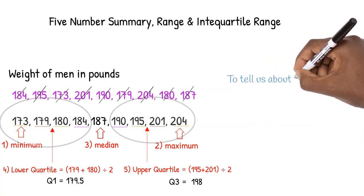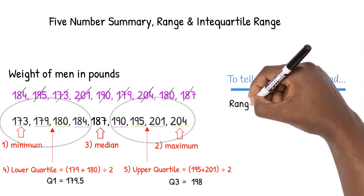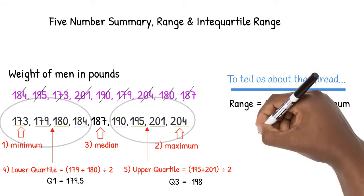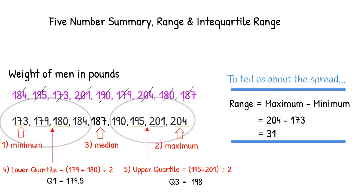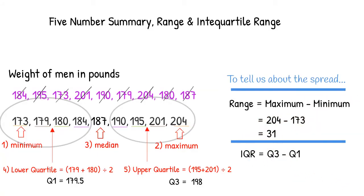While these numbers tell us a lot about where our data lies, we need two more values which will tell us how much our numbers are spread out. The range is found by subtracting the minimum from the maximum: 204 minus 173. Our range is 31. The interquartile range, otherwise known as the IQR, is found by subtracting the lower quartile from the upper quartile. Q3 minus Q1 equals 18.5. The bigger these two measures of spread, the more our data is spread out.